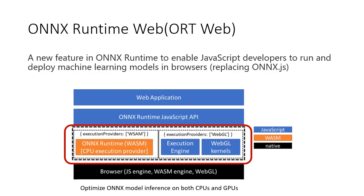This graph shows ONNX Runtime Web architecture. It has two backends: a WebAssembly backend for CPU and a WebGL backend for GPU. This allows ONNX Runtime Web to accelerate performance on both CPUs and GPUs. I will dive into each backend in the following slides.